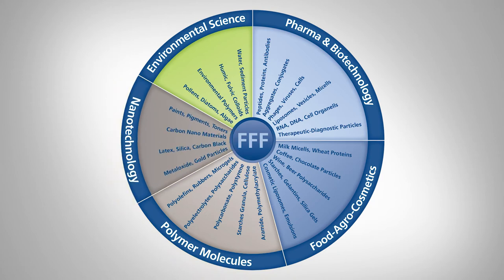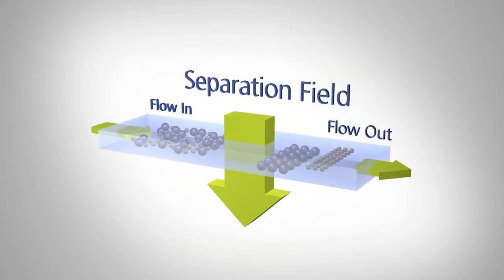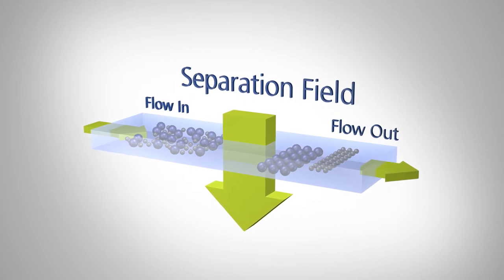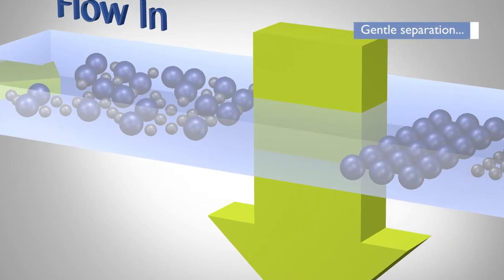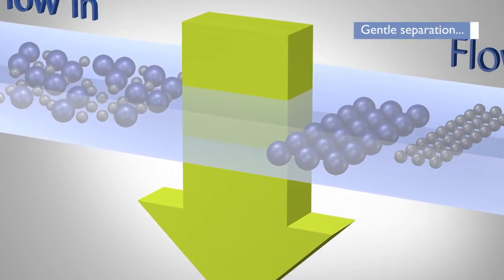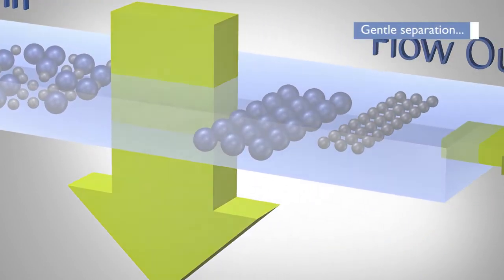The core of the system is the special field flow fractionation channel that separates the sample under the influence of a force field according to its size. The gentle separation takes place in an open channel with no stationary phase.